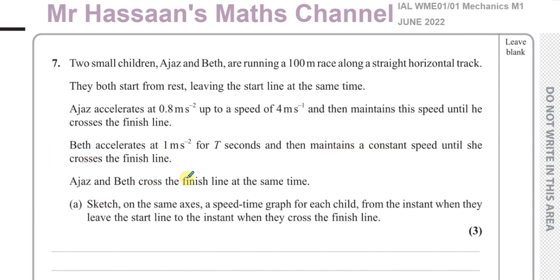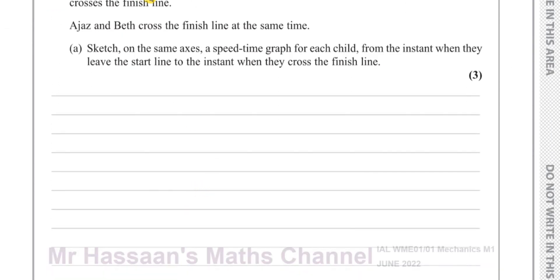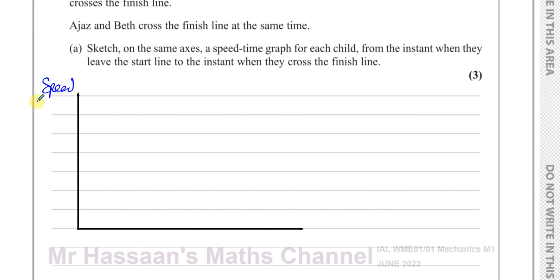Ajaz and Beth cross the finish line at the same time. We have to sketch on the same pair of axes a speed-time graph for each child from the instant they leave the start line to the instant they cross the finish line. So we're going to have speed in m/s on the y-axis and time in seconds on the x-axis.